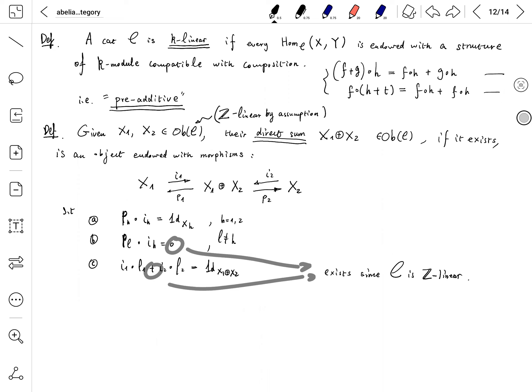Third condition: I1 compose P1 plus I2 compose P2 equals the identity map on X1 direct sum X2. This zero and addition of morphisms makes sense because the hom-set is a Z-module, so you can do addition and it has a zero element.